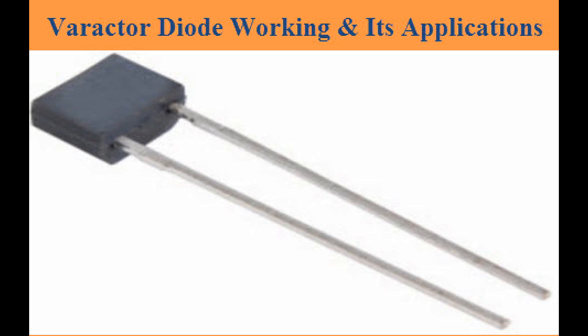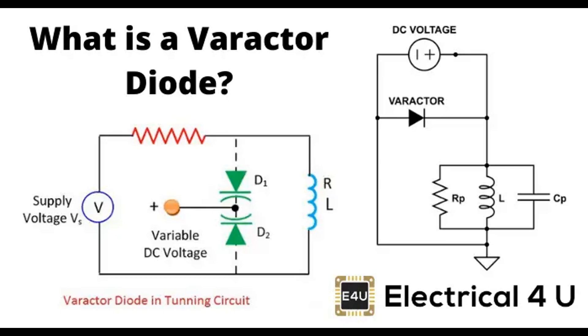The capacitance decreases as the reverse-bias voltage increases, and increases as the reverse-bias voltage decreases. The function of a varactor diode is to serve as a voltage-dependent variable capacitor. Here are the key points regarding its function.